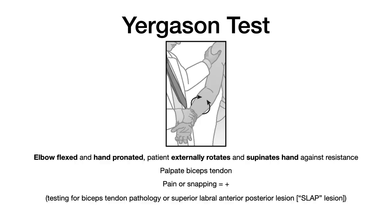The Yergason test is testing for two things: biceps tendon pathology or a SLAP lesion — Superior Labral Anterior Posterior lesion. The patient's elbow is slightly flexed and their hand is pronated. Against the physician's resistance, the patient attempts to externally rotate and supinate their hand, while the physician palpates the biceps tendon. If there's a painful sensation or a snapping sound in that region, that's a positive Yergason test, indicating biceps tendon pathology or a SLAP lesion.